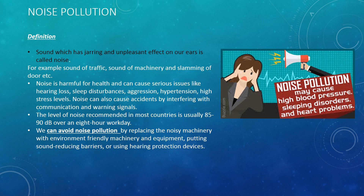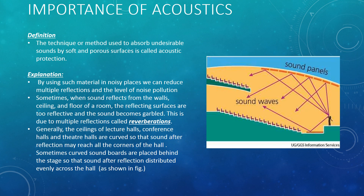A daily life example is: when you remove the silencer from a motorbike, it causes a lot of noise; when you put the silencer back, it reduces the noise. So the silencer is the environment-friendly equipment that reduces the sound of the motorbike. Our next topic is the importance of acoustics in our daily life.